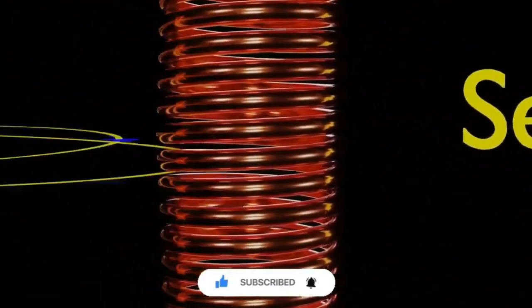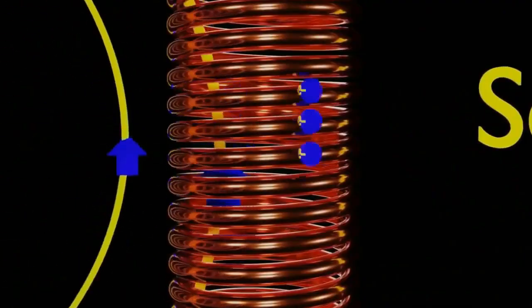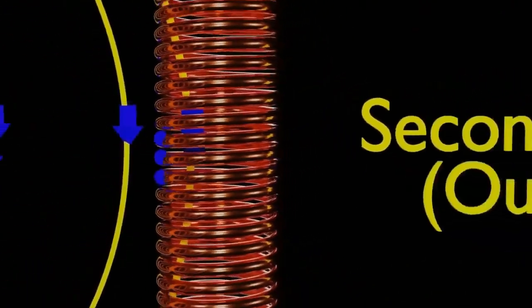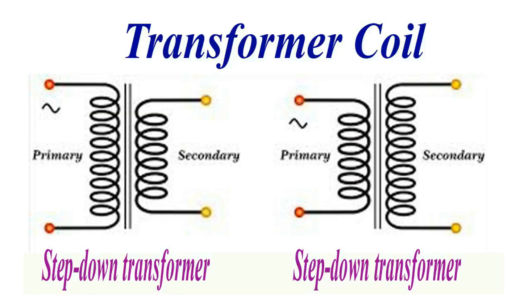The simplest transformer has two coils of wire, called the primary and secondary windings, wrapped around a magnetic core. The ratio of the number of turns in the two windings determines whether the voltage is stepped up or stepped down.